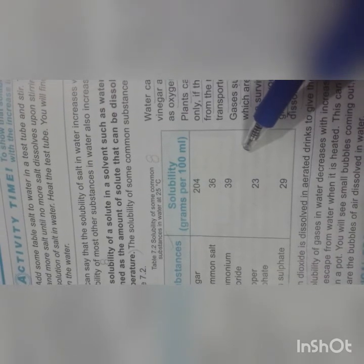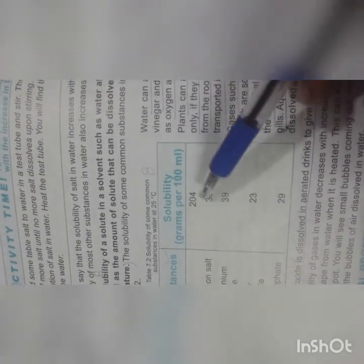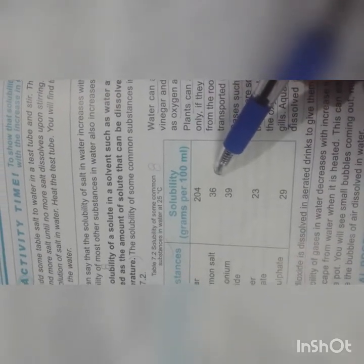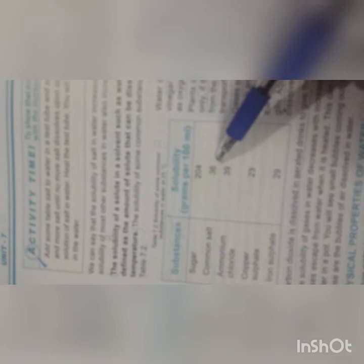This is a table which shows some substances and their solubility at 25 degrees Celsius. Sugar is 204 grams per 100 ml at 25 degrees C. Common salt is 36 grams per 100 ml of water at 25 degrees C. Ammonium chloride is 39, copper sulfate is 23, and iron sulfate is 29.